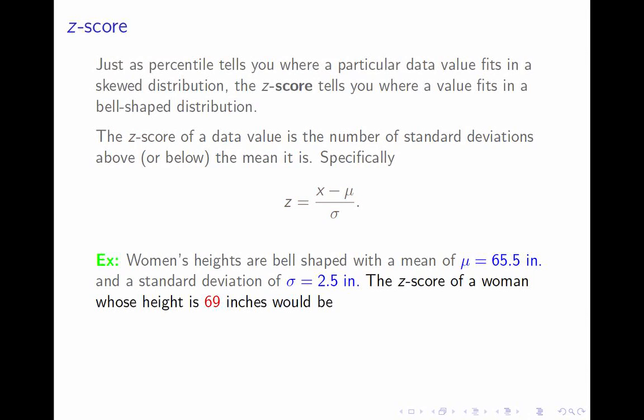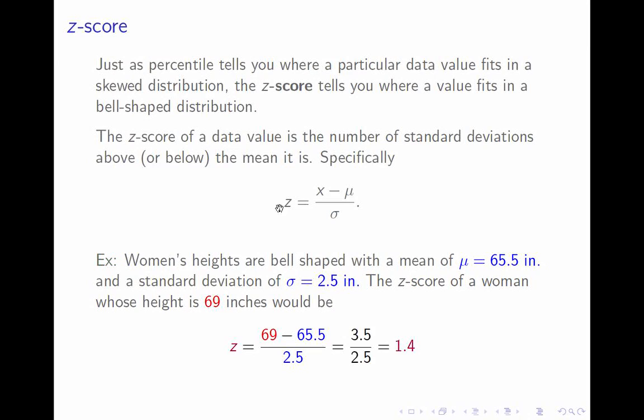So, I could ask, what would the z-score of a woman whose height is 69 inches be? To find that, you would take the height of 69 inches and you'd subtract the mean of 65.5 inches. That gives you 3.5 inches. That's how far above the mean this particular woman's height is. It's 3.5 inches above the mean.